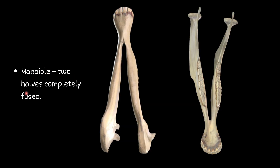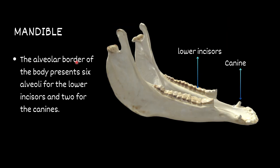The mandible has two halves that are completely fused, so you will not find any mandibular symphysis here. The alveolar border of the body presents six alveoli for the lower incisors and two for the canines.